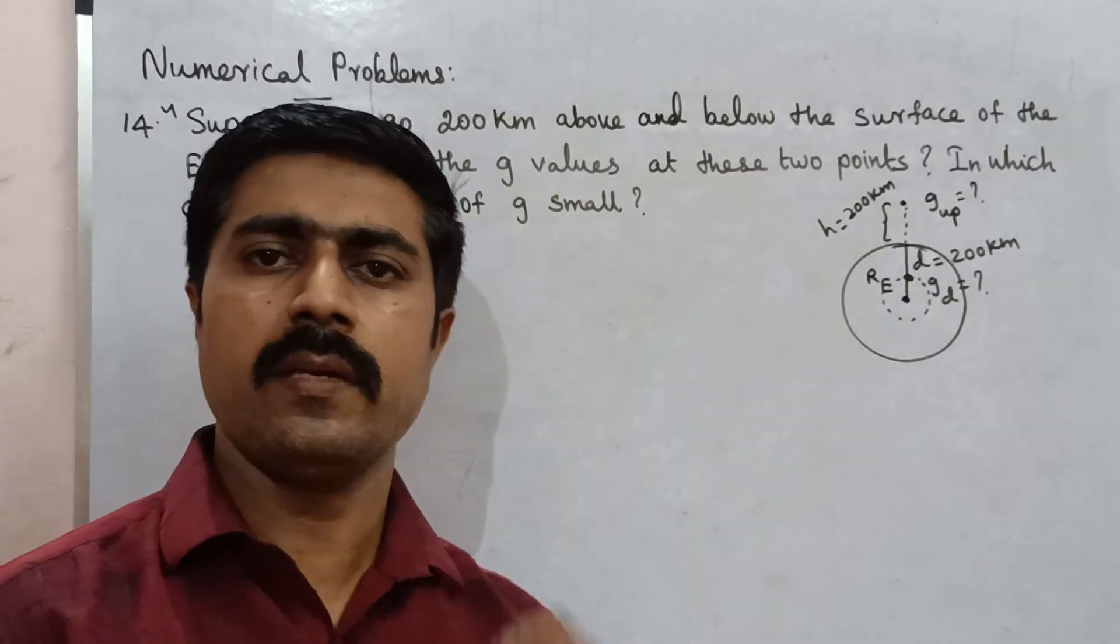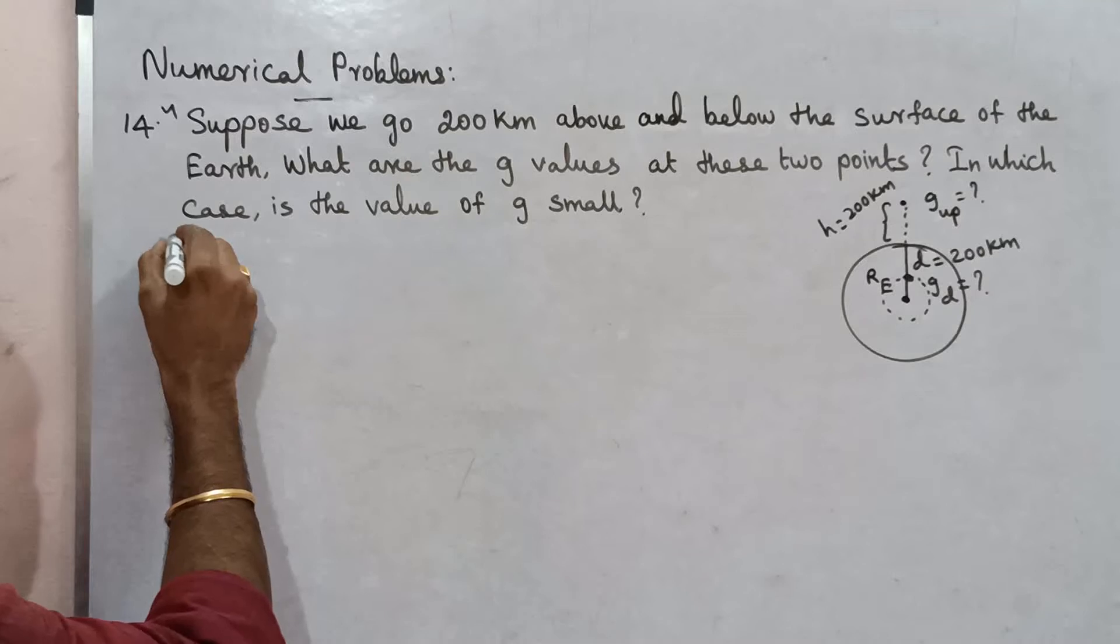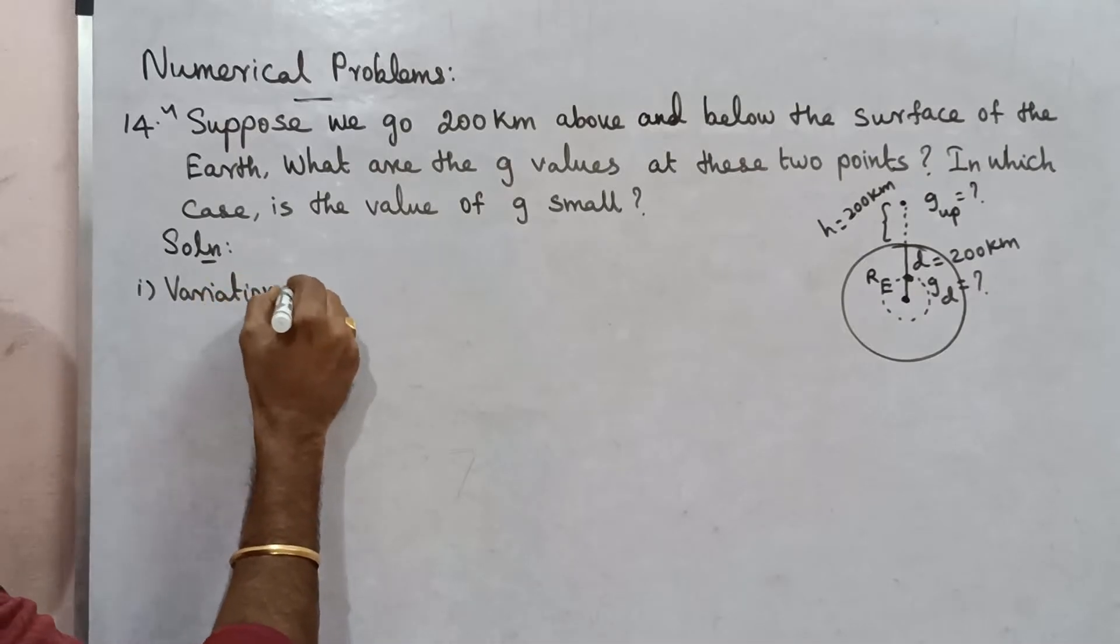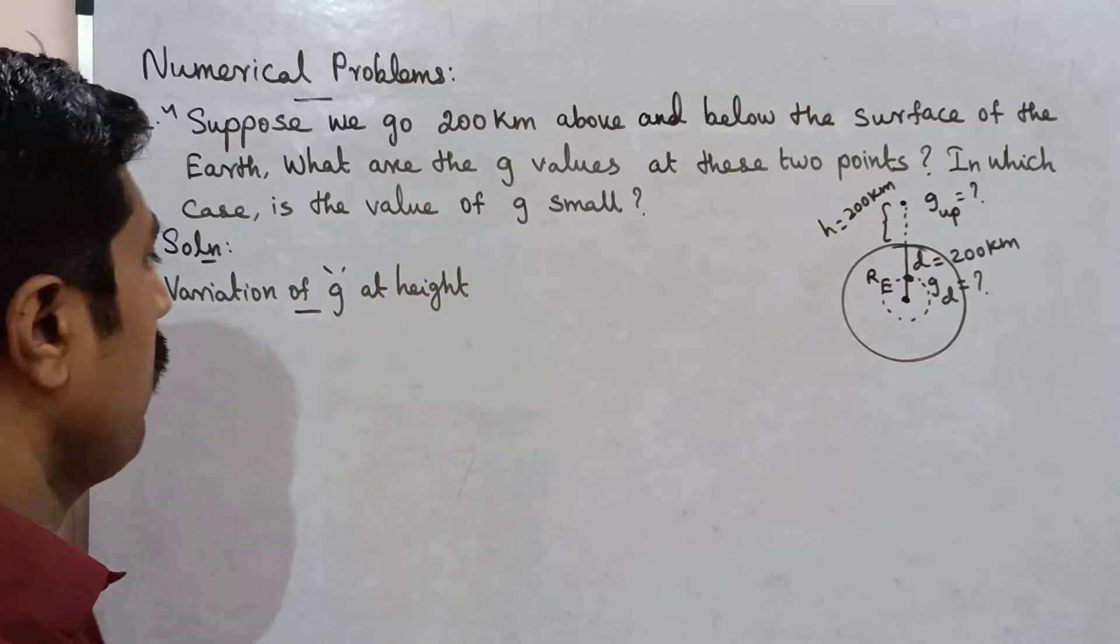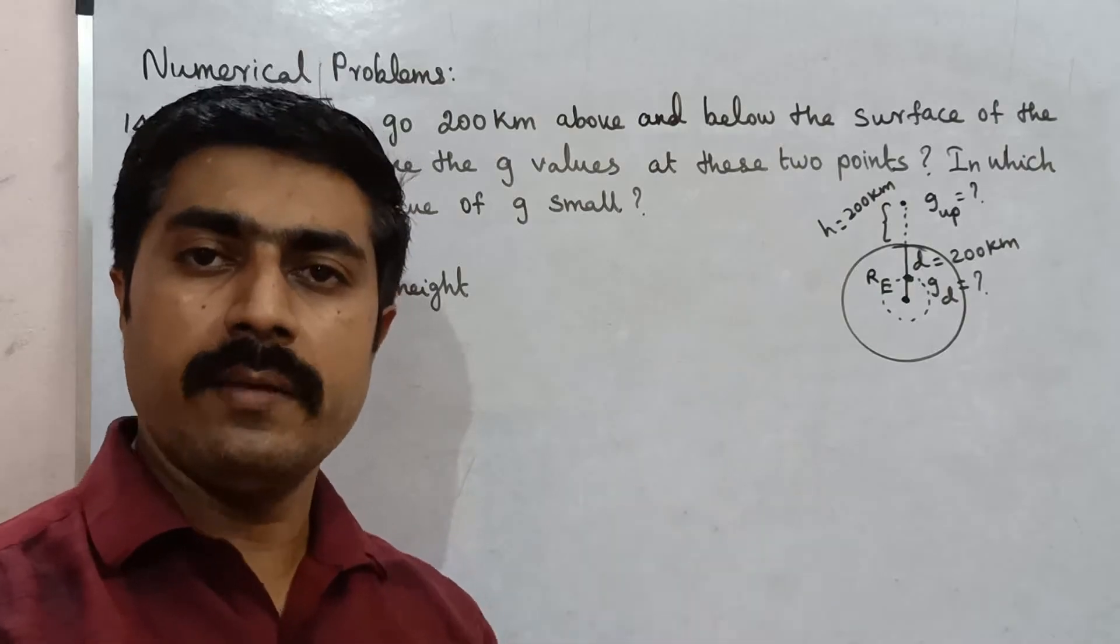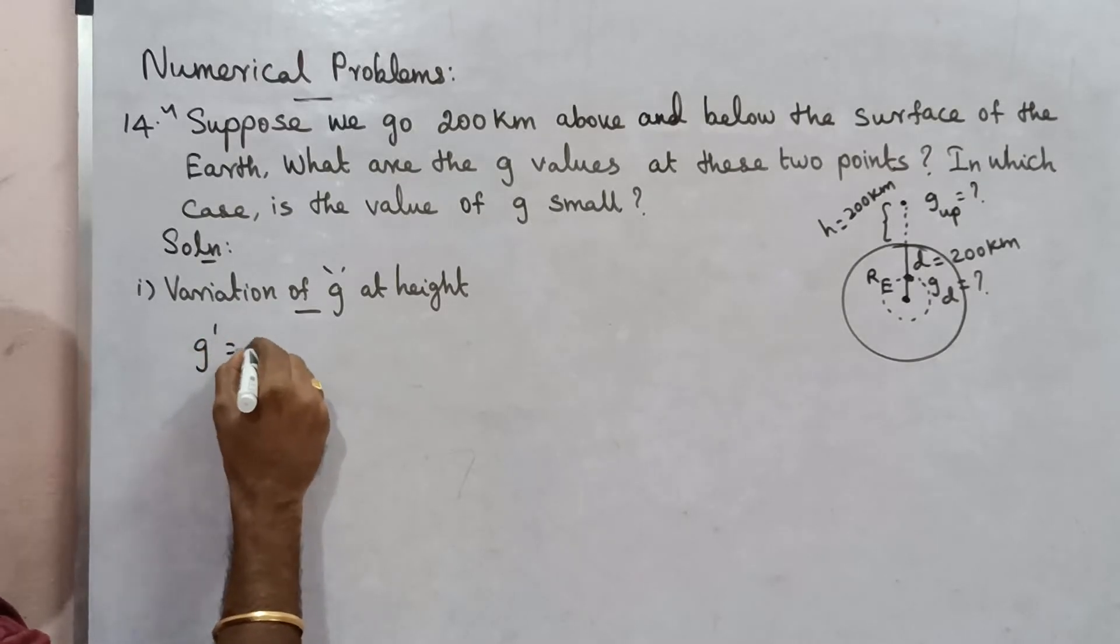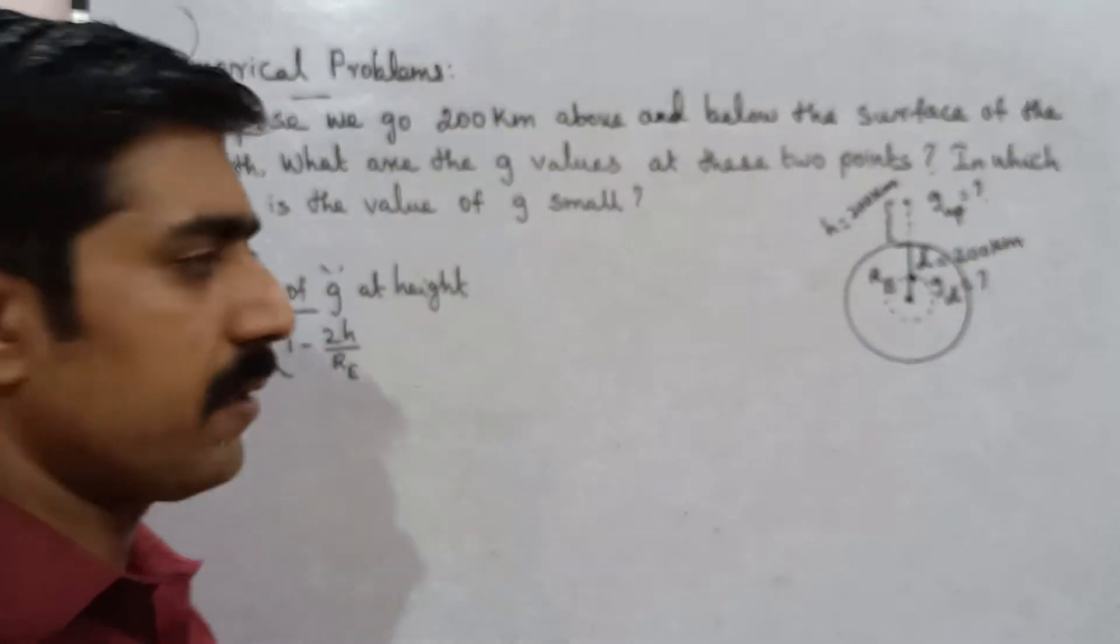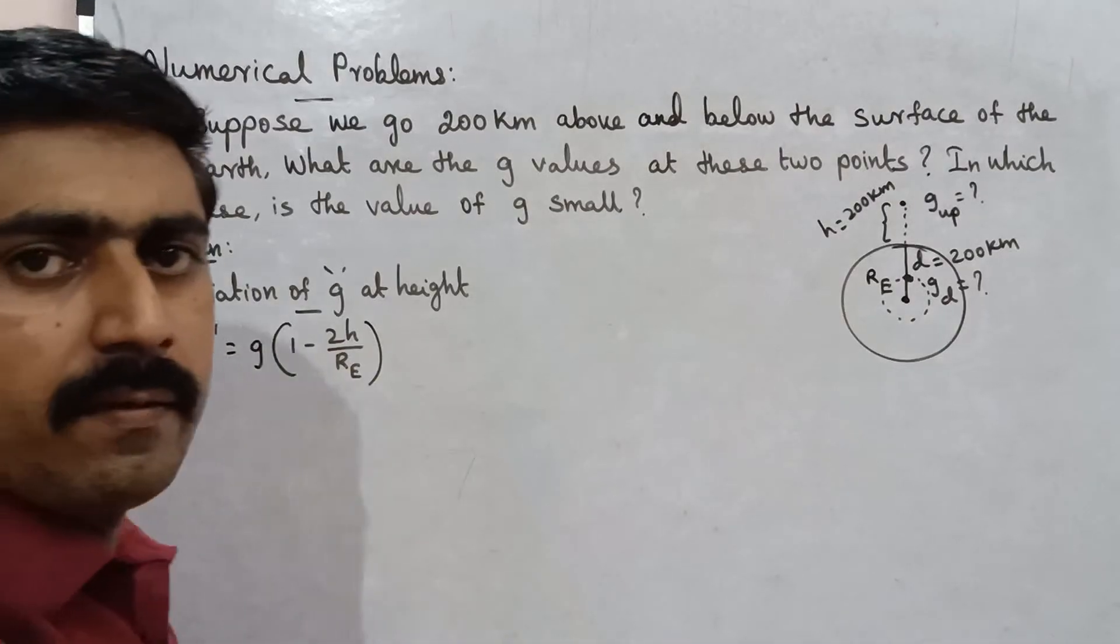What are the g values at these two points? In which case is the value of g small? So solution: variation, first one variation of g at height. Variation of g: latitude, altitude, depth. Important. So height formula: g' is equal to g into 1 minus 2h by Re. Re is radius, small e capital E.